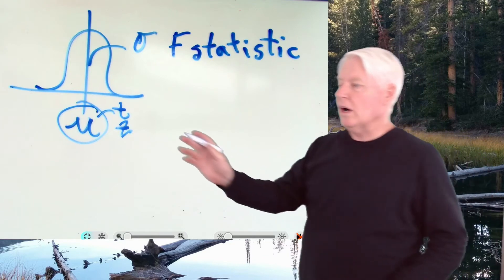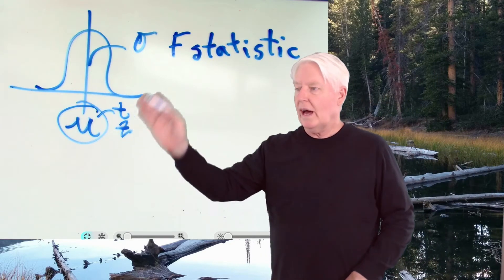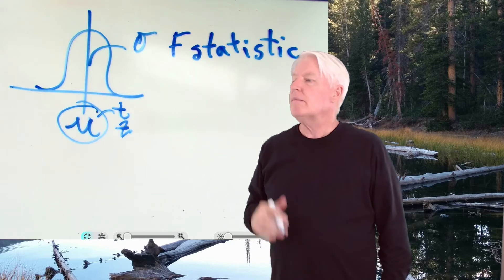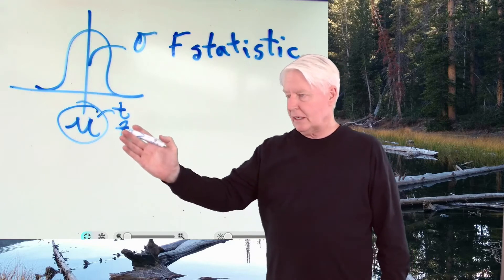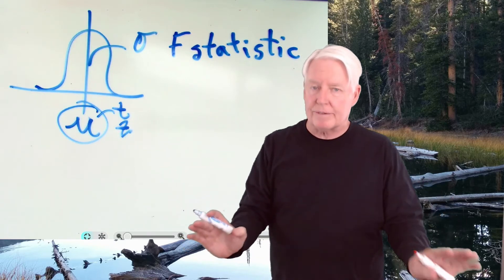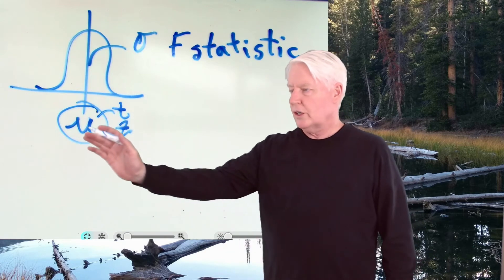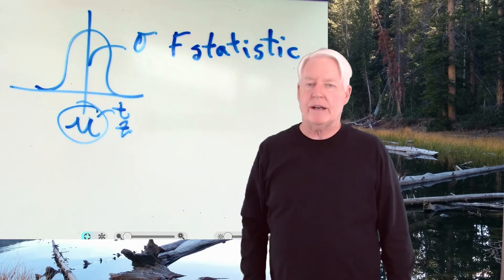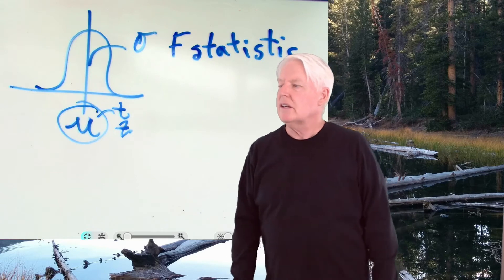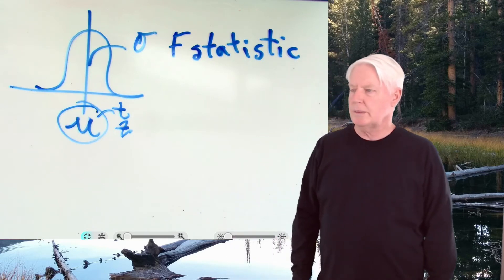The F statistic is unique in that it tests to see if the standard deviation changes. In fact, I never run a T and Z test without also running the F statistic. Why? Because if I'm interested if something changes, I want to know if any part of the distribution changes, which includes the average and the standard deviation.